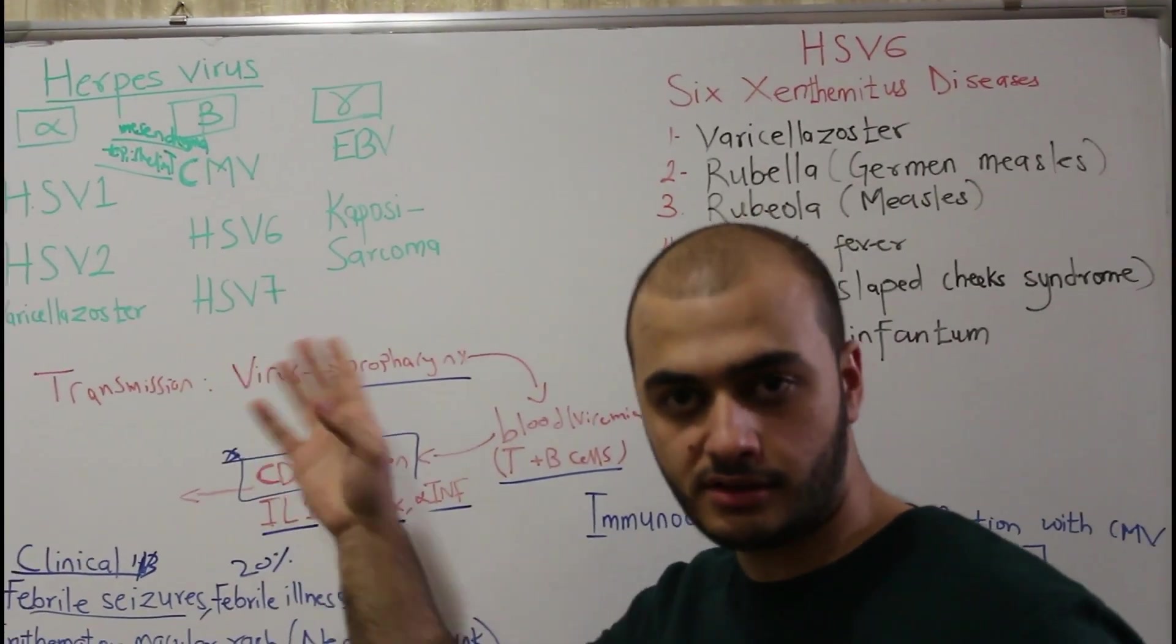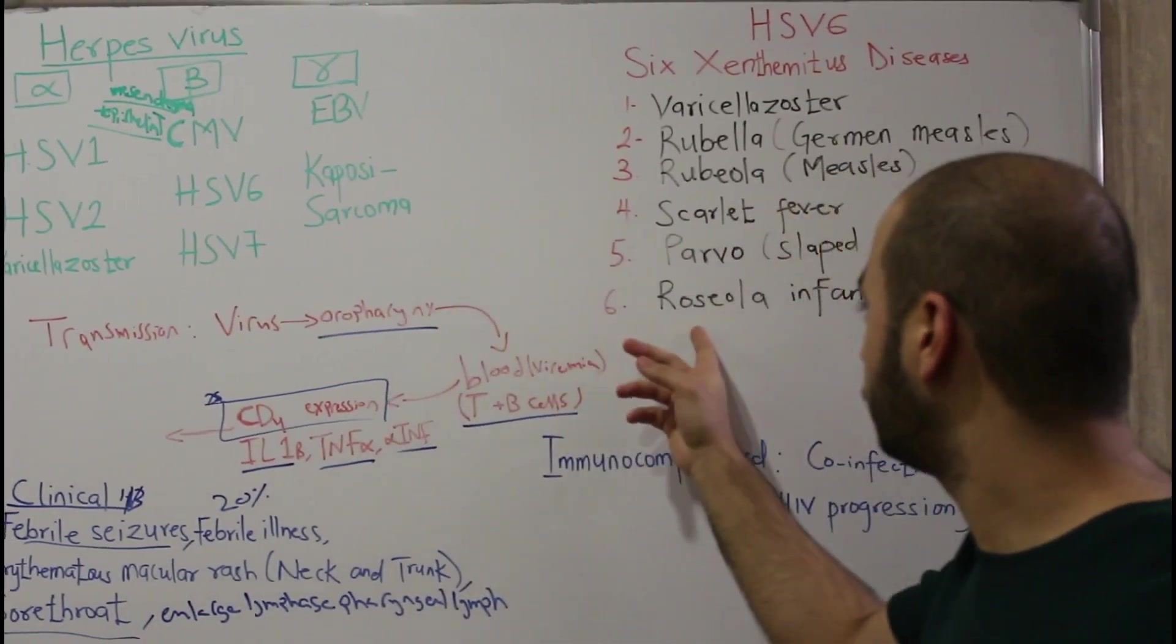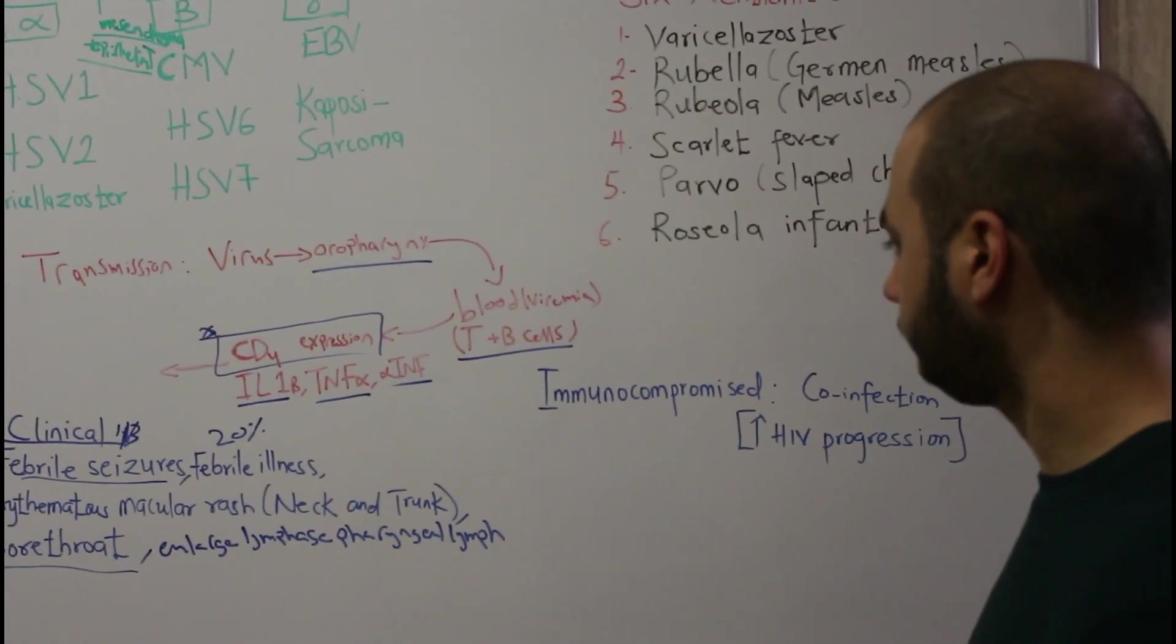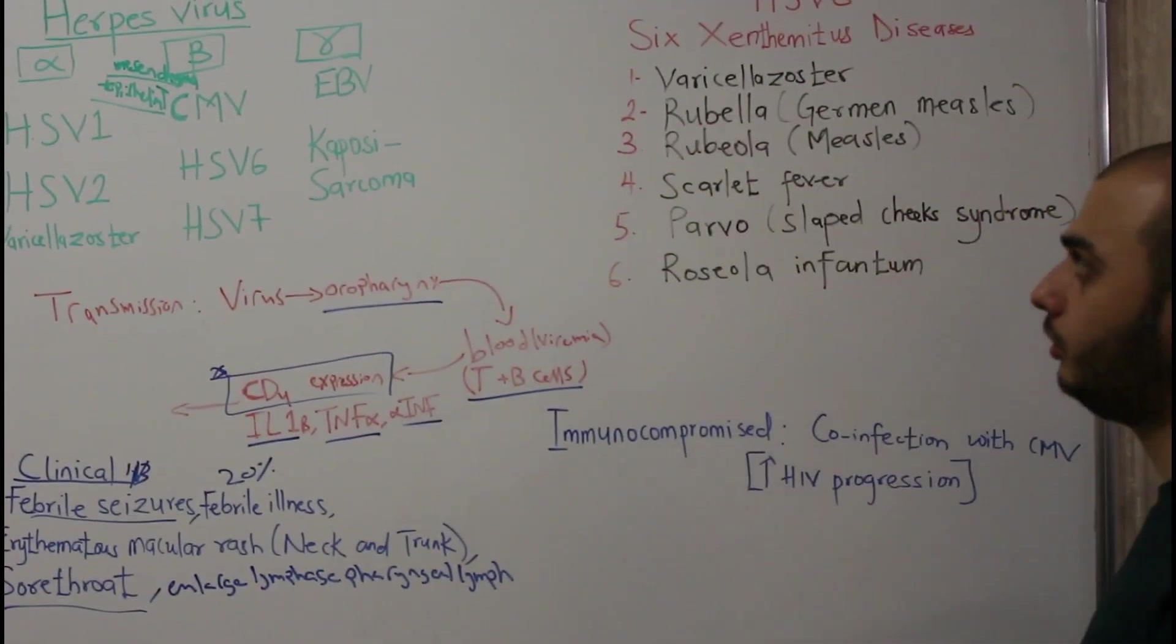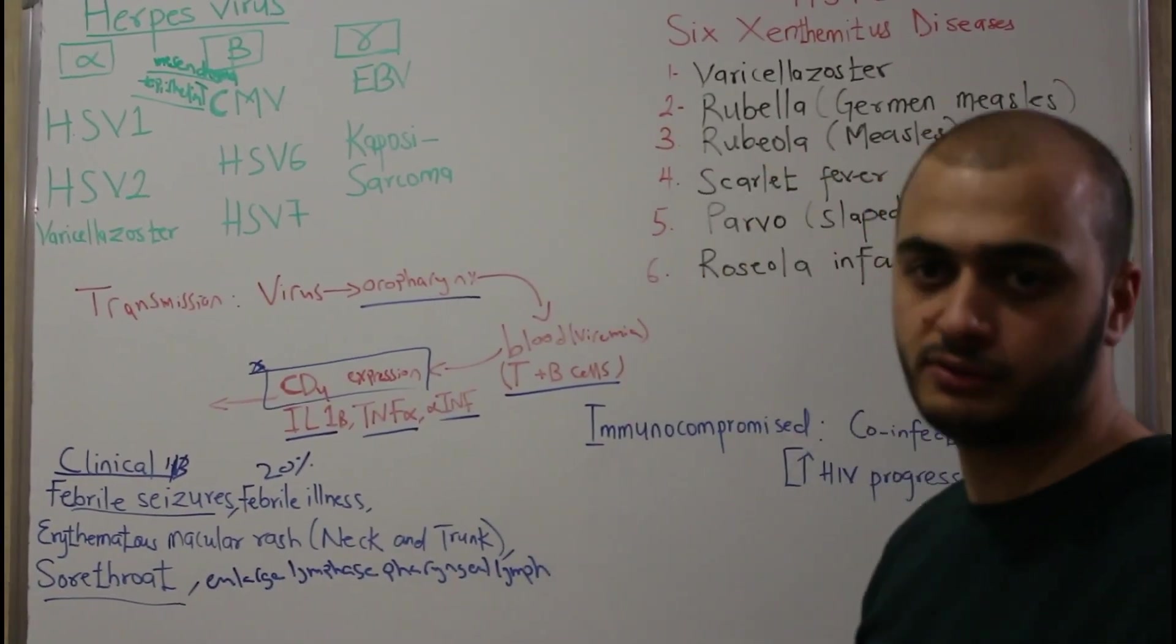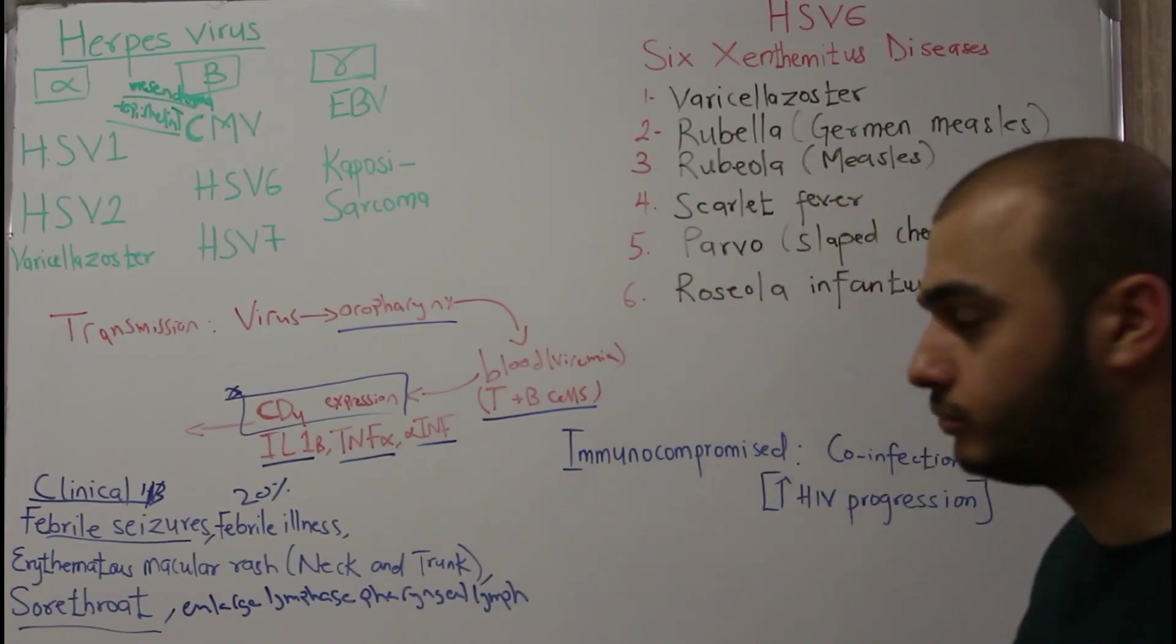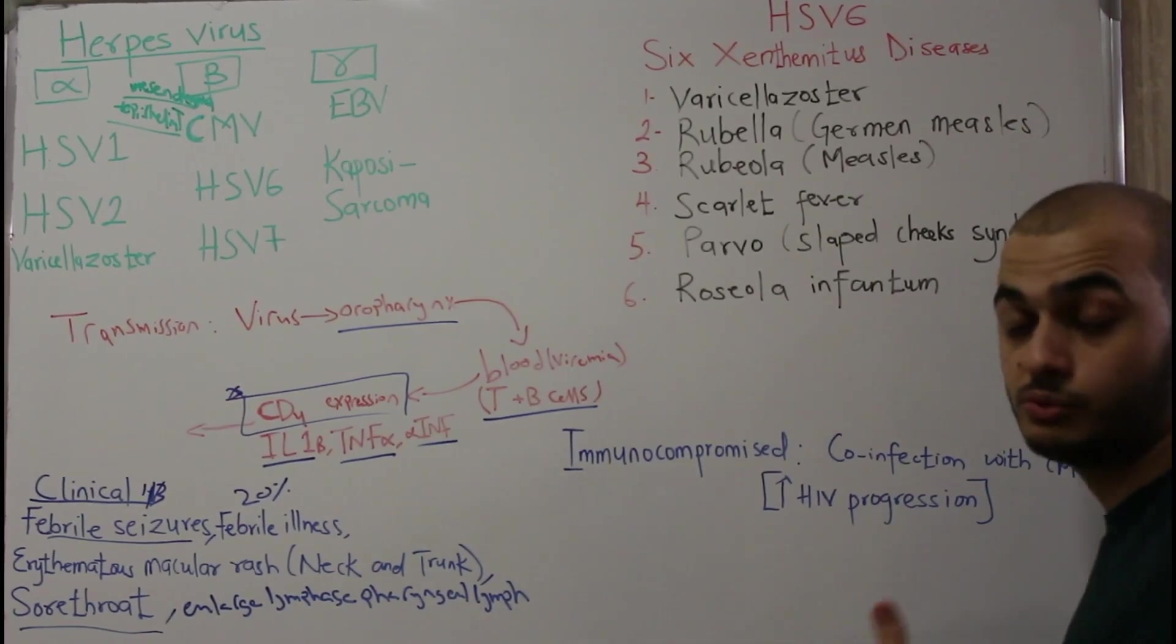Let me tell you that herpes simplex 6 and 7 have the same pathogenesis and clinical presentation. Herpes simplex 7 also causes roseola infantum. We have to differentiate between these. All are characterized by rashes, fever, and sore throat. When a child comes to you with rashes and fever, you think about one of these six diseases.